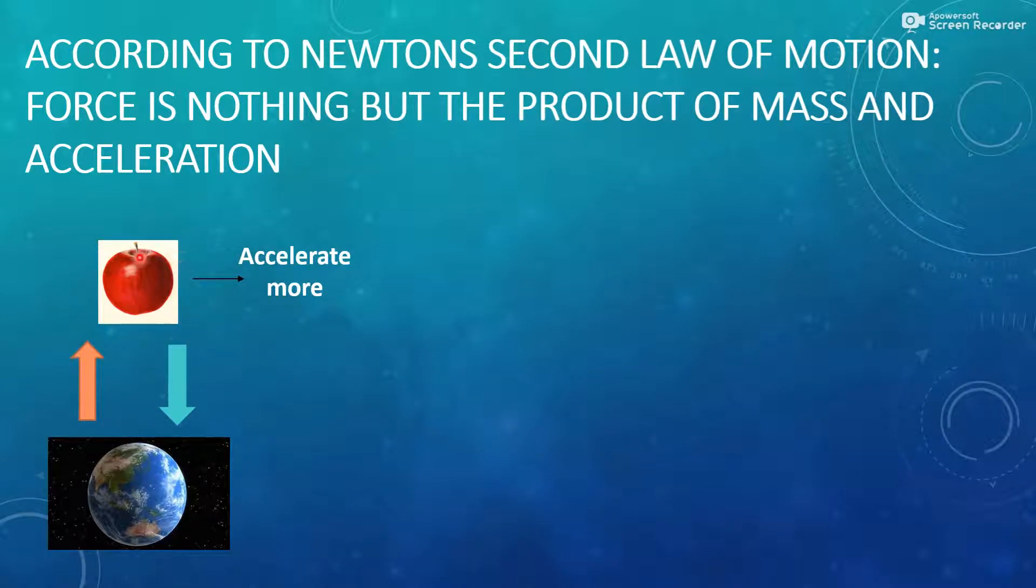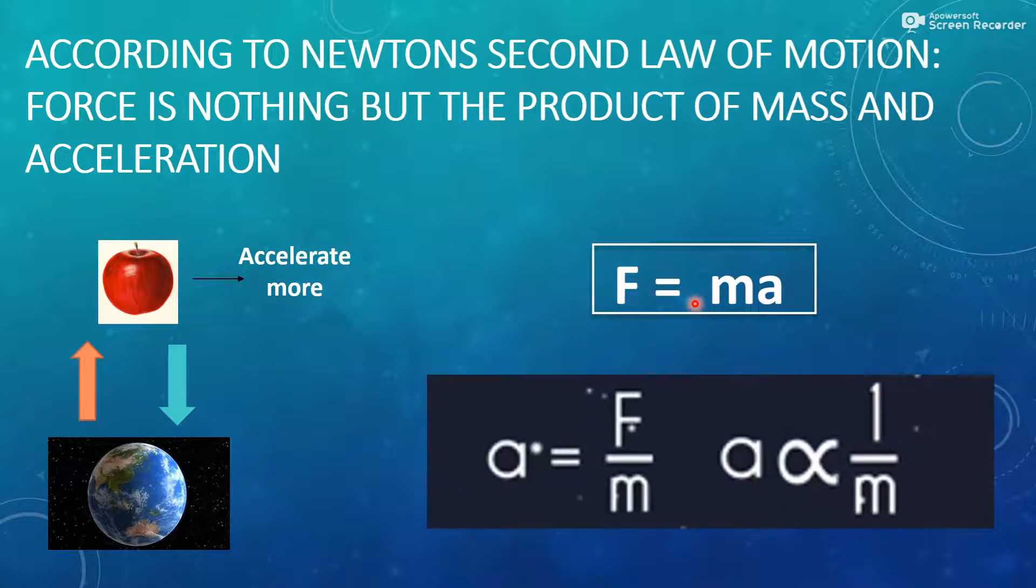Of course, fruit will accelerate more because according to Newton's second law of motion, force applied is the product of mass and acceleration. It means F is equal to ma or a is equal to F by m. Or we can say that acceleration is inversely proportional to mass.